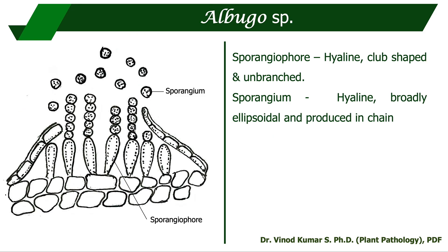Albugo species causes white blister disease of crucifers as well as Amaranthus. Here the sporangiophore is hyaline, club-shaped, and unbranched. The sporangia are hyaline, broadly ellipsoidal, and produced in chains. This is the only pathogen under Chromista that produces sporangia in chains, making it a unique distinctive morphological character.